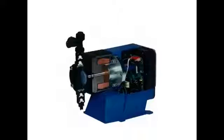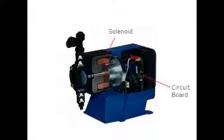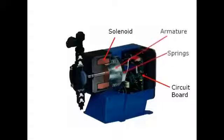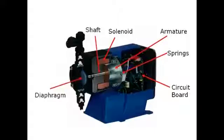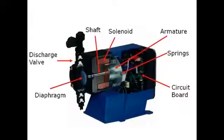The Pulsatron series pump is classified as an electronically driven diaphragm pump. The circuit board supplies a voltage to the solenoid, which generates a magnetic field. This pulls the armature forward against the spring tension. This also pulls the shaft forward, which has a diaphragm connected to it. The diaphragm displaces the fluid in the head through the discharge valve.